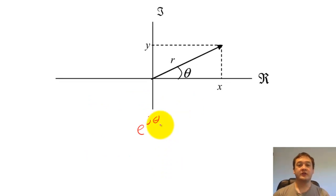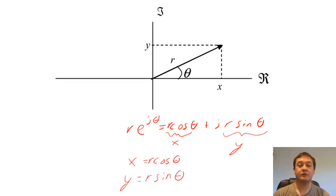Euler's relation tells us that e to the j theta can be converted into Cartesian coordinates. If we multiply both sides by r, then we can easily find a way to express x and y in terms of r and theta.